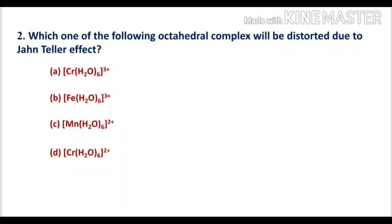For option A, chromium is in the +3 oxidation state with three electrons in the T2g orbitals. They are symmetrically filled, so there is no expectation of Jahn-Teller distortion.